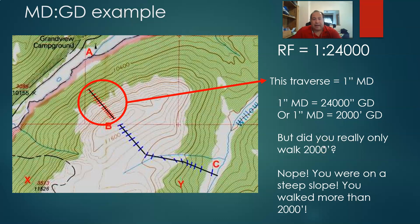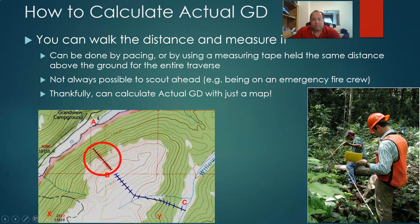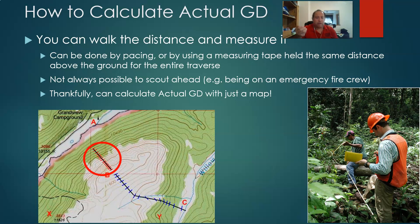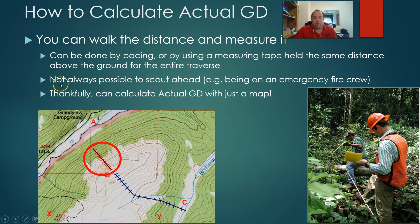If we were to go walk this out in the field, are we going to walk 2,000 feet? No, because it's a steep slope. Since we know that map distance underestimates, we're going to think it's actually going to be more than 2,000 feet, but we can calculate that out to figure out exactly what we're going to deal with. You can go out and walk it and measure it using pacing, measuring tapes, or GPS — but that's not always possible. It'd be nice to figure it out on the map rather than having to just go out there and figure it out.